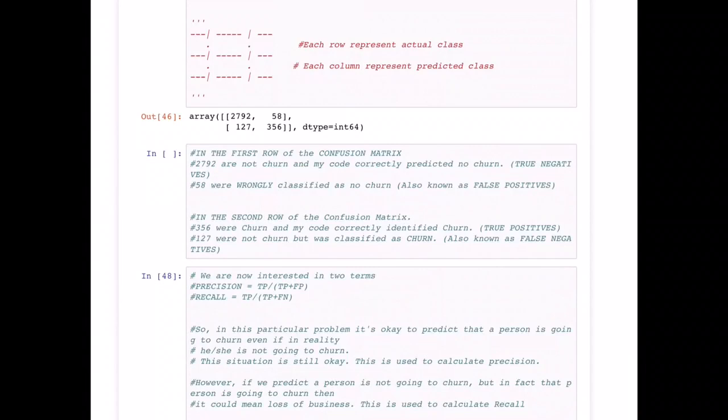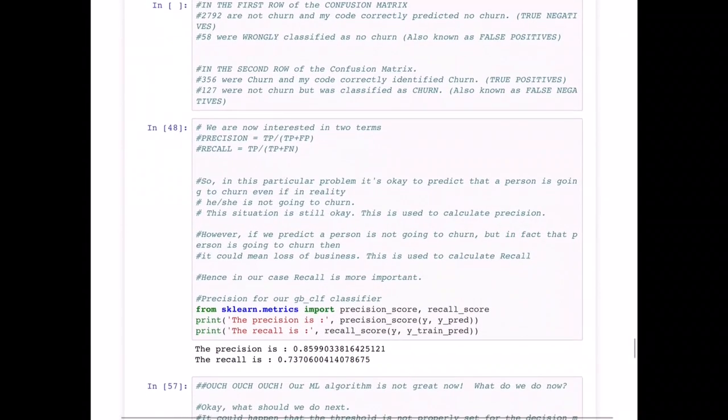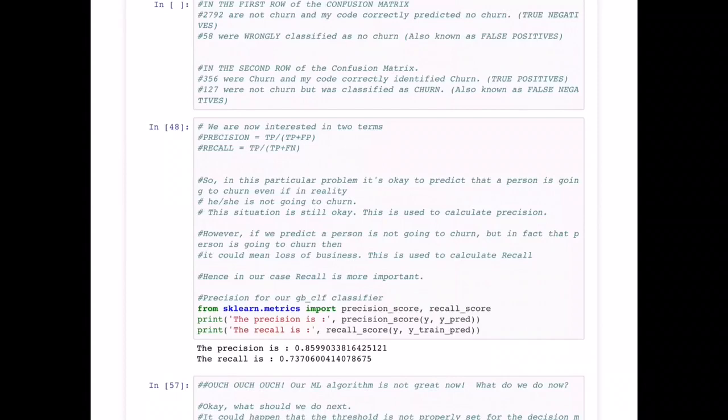This confusion matrix gives us a lot of information about my classifier. Now we are interested in knowing two terms: one is called precision, which is the true positive over the true positive plus false positive, and the recall is the ratio of true positive over the sum total of true positive and false negative. But what does that mean in the real world?